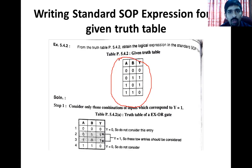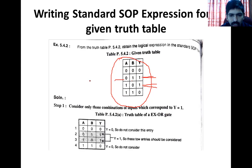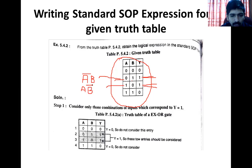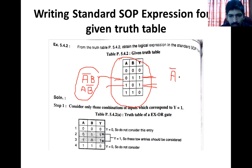जैसे यह truth table दिया है, इसको note down करिए। इस truth table से हमें SOP expression बनानी है। सबसे पहले Y equal to 1 वाली terms को अलग से note down कर लेते हैं — ये दो हैं जिनमें Y equal to 1 आ रहा है। अब पहली में A zero है, B one है — तो इसकी product term होगी A bar, B। दूसरी में A one है, B zero है — तो A, B bar। ये दोनों min terms बन गईं।